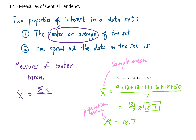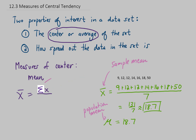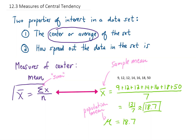This symbol means sum, and it's actually a Greek sigma. So the numerator means that we're adding up all of our data values, and then we divide by the number of data values, which we typically call n. That right there is some fancy notation for calculating a sample mean.